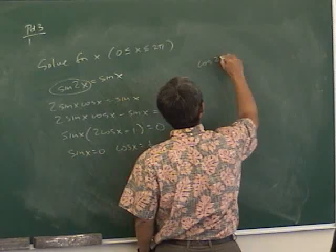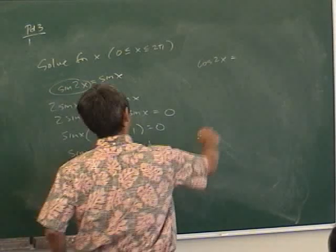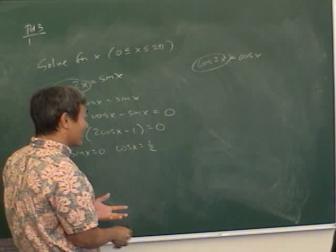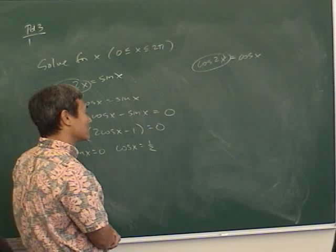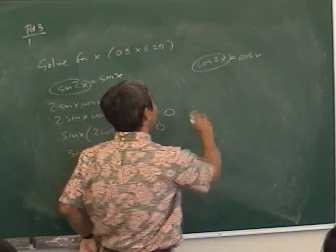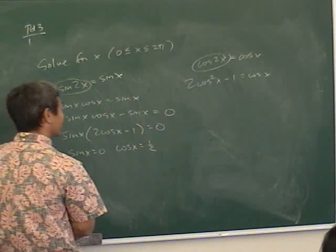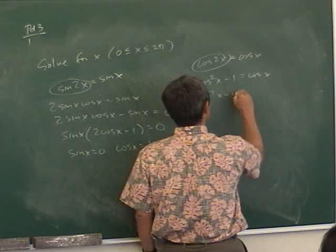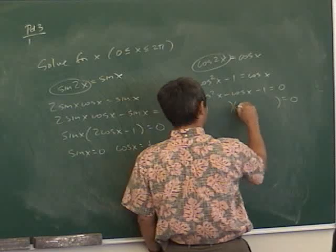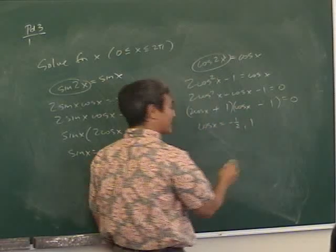For cosine(2x) = cosine x: use an identity for cosine(2x). Since the right side is cosine, use 2cosine²x − 1 to make everything one variable. That gives 2cosine²x − cosine x − 1 = 0, which factors. So cosine x = −1/2 or cosine x = 1. These are all numbers you know, and you can take it from there.